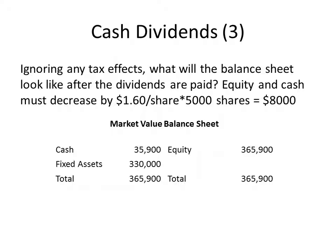Now we will figure out what the balance sheet looks like after these dividends are paid. Equity and cash must both decrease by $1.60 per share. With 5,000 shares outstanding, 5,000 times $1.60 is $8,000. Equity decreases from $373,900 down to $365,900, and cash also decreases from $43,900 down to $35,900. As a shareholder who received the $8,000, your wealth hasn't changed, because you have a dividend worth $8,000 and shares of a company worth $8,000 less — your net wealth has not changed one cent.